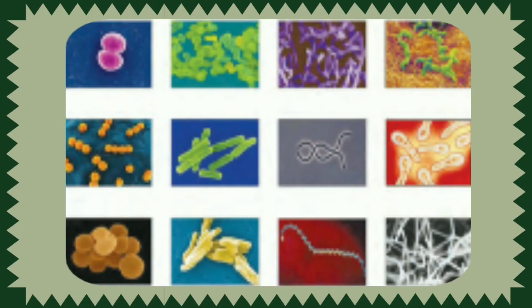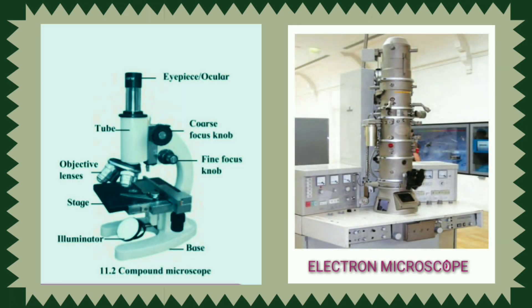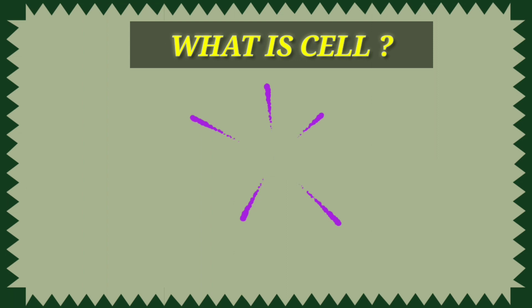Friends, there are million types of living organisms on the earth. They differ in their shape and size. All these living organisms are made up of cells. Cells are very small and very minute. Hence, cells cannot be seen by our naked eyes.